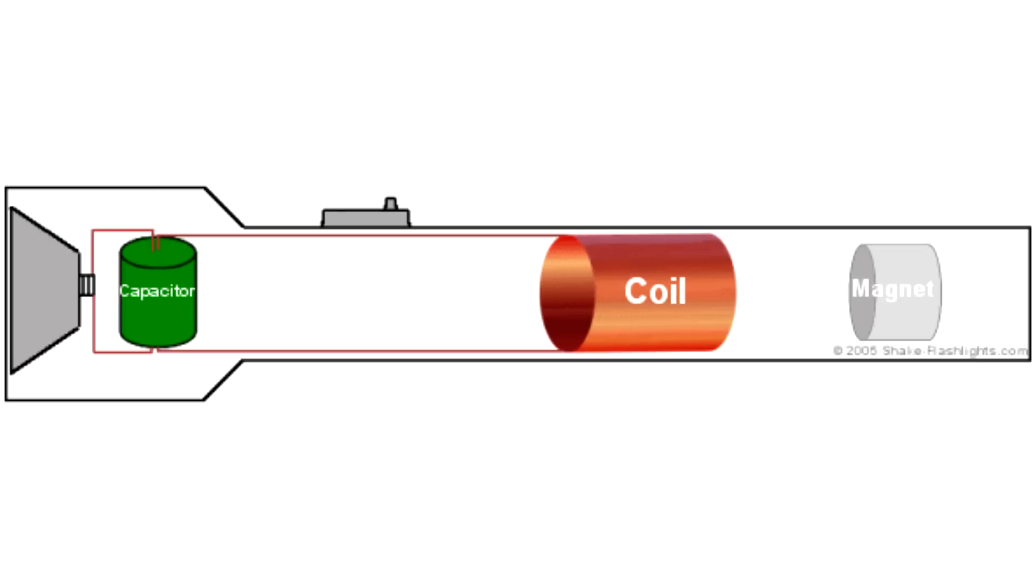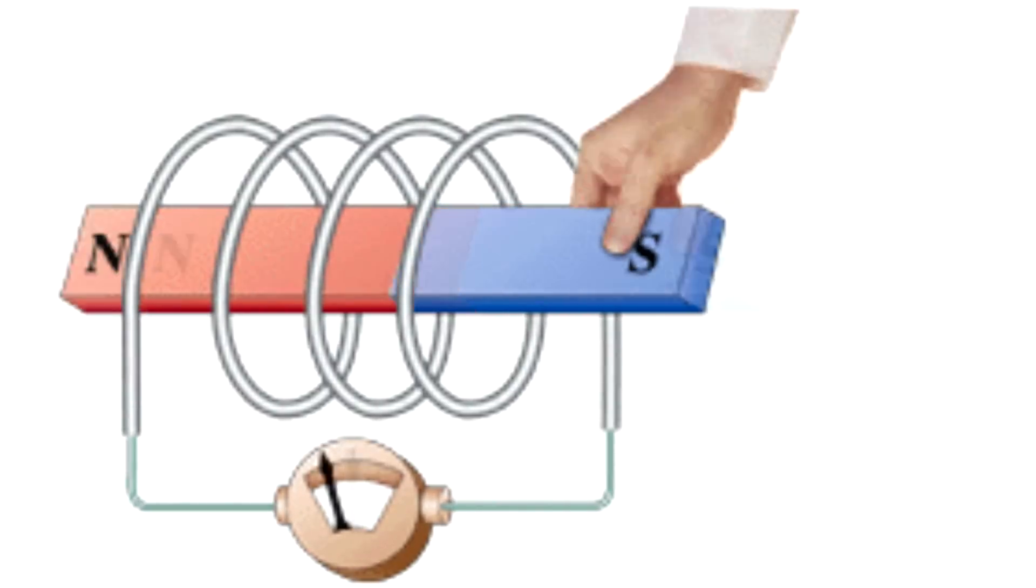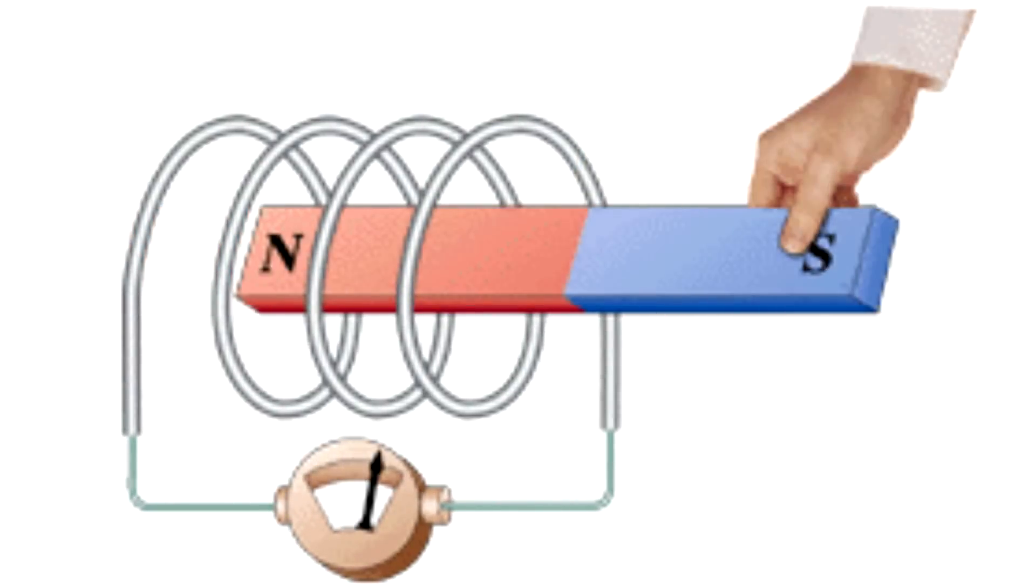The construction of Faraday lanterns is quite simple. The winding of the coil is wound on a non-metallic frame or tube. Inside of the tube, a magnet moves freely. During this movement an alternating magnetic field is formed, due to the phenomenon of electromagnetic induction.